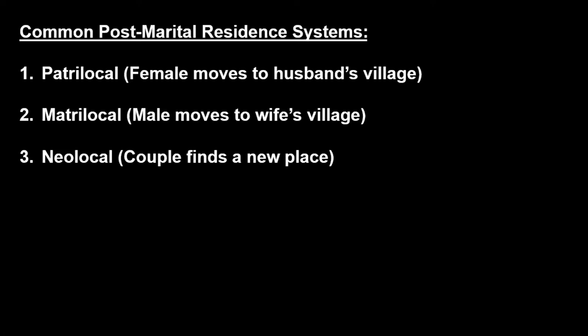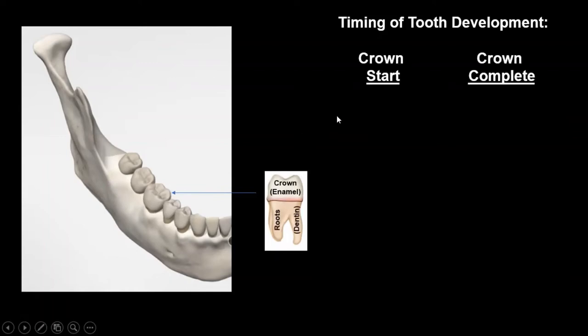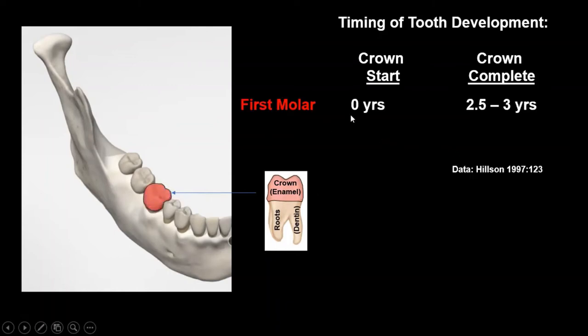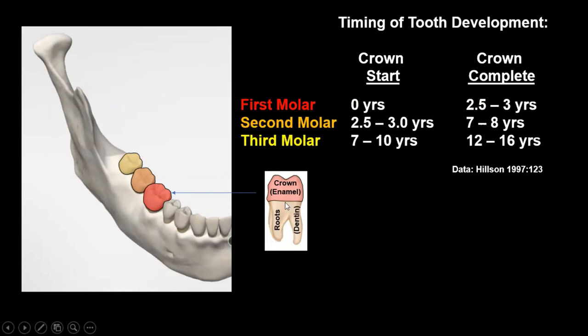As archaeologists, we would like to reconstruct these ancient post-marital residence systems based on signatures preserved in teeth and bone. One of the neat things about teeth is that they form at different ages in our lives. Looking at the mandible here and a first molar — the permanent first molar — the crown starts forming at about age zero and finishes between two and a half and three years. For a second molar, the crown starts forming around two and a half to three years and finishes between seven and eight years. For a third molar, this starts between seven and ten years and finishes between twelve and sixteen years. As that tooth is growing, it's locking in the signature of where you're living at those different points in time.